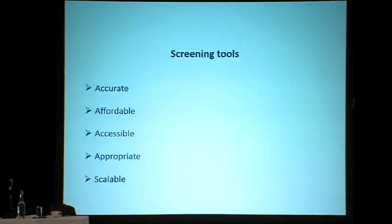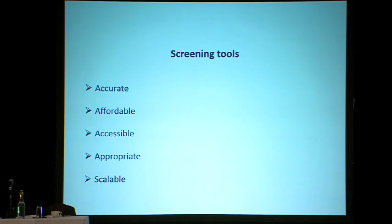These technology-based screening tools firstly need to be accurate — false positives not only waste money but also drain resources. They need to be affordable; we know that less than 1% of governmental healthcare budgets are made available for mental health. They need to be at least as accessible to people living in the Rift Valley as to people living in Silicon Valley. They need to be appropriate across cultures and languages — not all cultures allow females to have and use mobile phones, and some cultures do not allow videotaping or photographing faces at all. And it needs to be scalable — it needs to grow with the population.